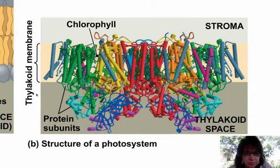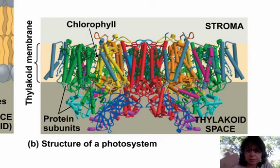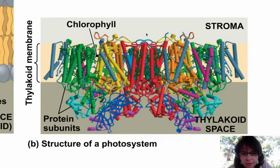Here's the membrane spanning region. Here are transmembrane domains. These are alpha helices talked about in biochemistry — the protein stuff — that alpha helices usually span membranes because they are amphipathic.